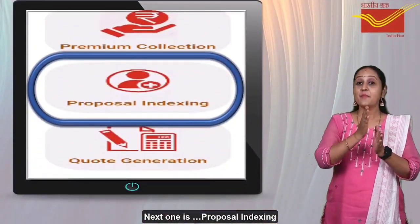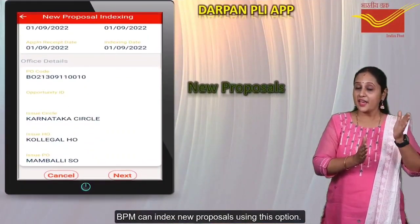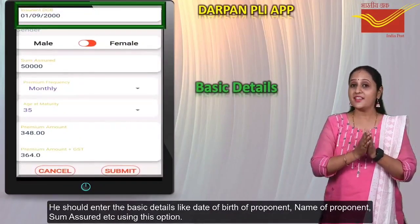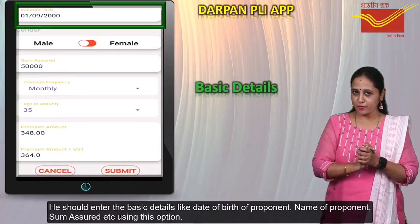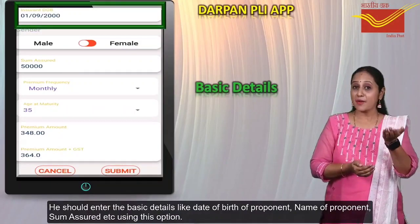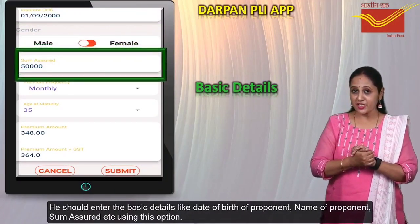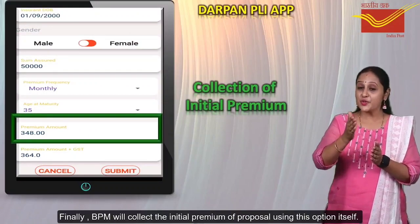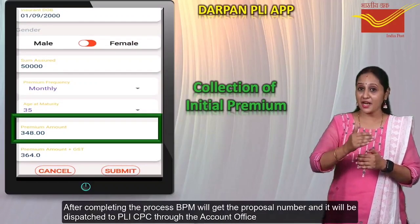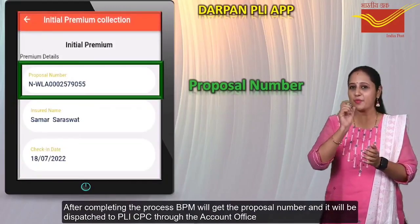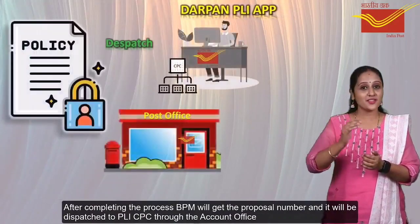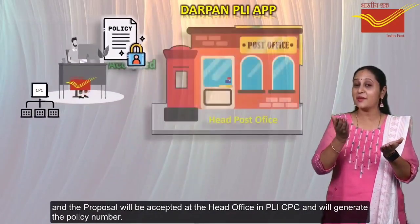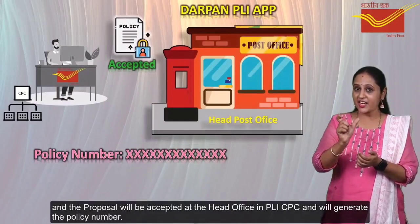Next one is Proposal Indexing. BPM can index a new proposal using this option. He should enter the basic details like date of birth of proponent, name of proponent, submission details, etc. BPM will also collect the initial premium of the proposal using this option. After completing the process, BPM will get the proposal number and it will be dispatched to the PLICPC through the account office, and the proposal will be accepted at the head office in the PLICPC, which will generate the policy number.